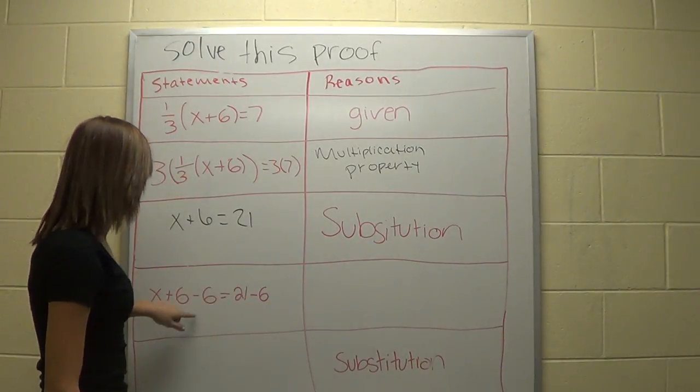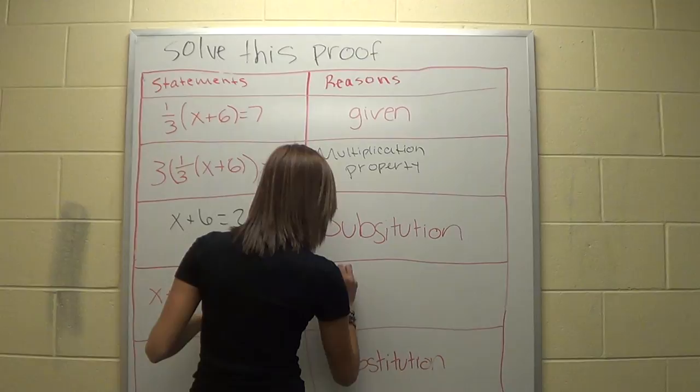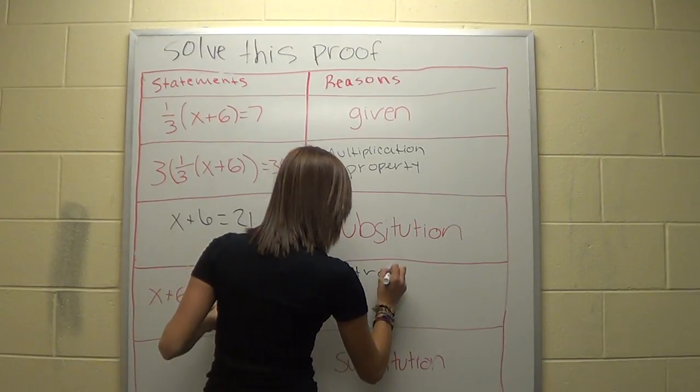And in the next one, we're subtracting 6 from each side. So then we write subtraction property.